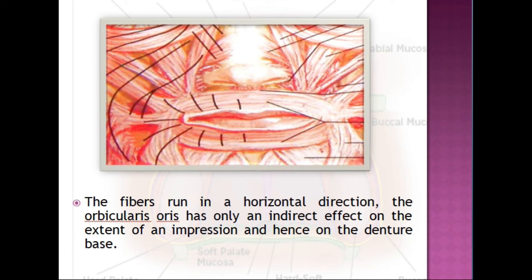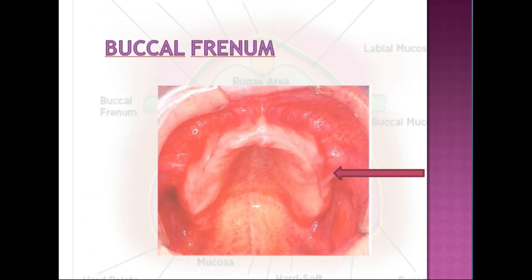The buccal frenum is normally located between the canine and the first premolars. Usually, the buccal frenum will be multiple, thicker, and broader than the labial frenum. The buccal frenum becomes active during whistling, blowing, or during pronunciation of V or W sounds, so adequate relief should be given and functional movements should be recorded accordingly.